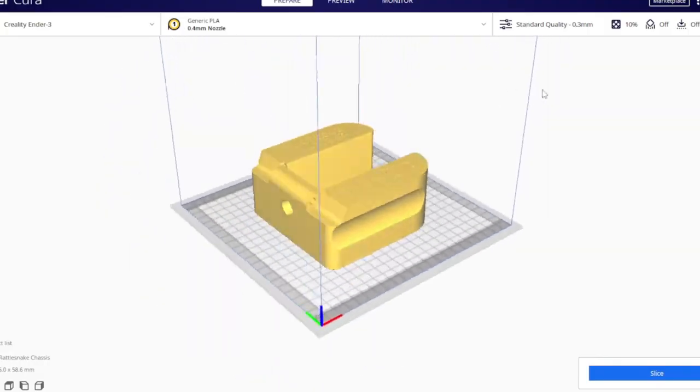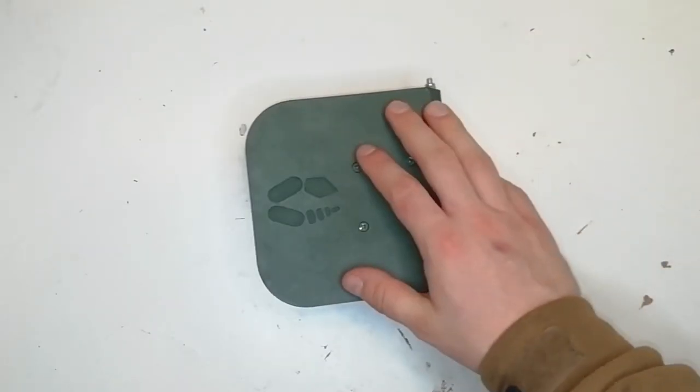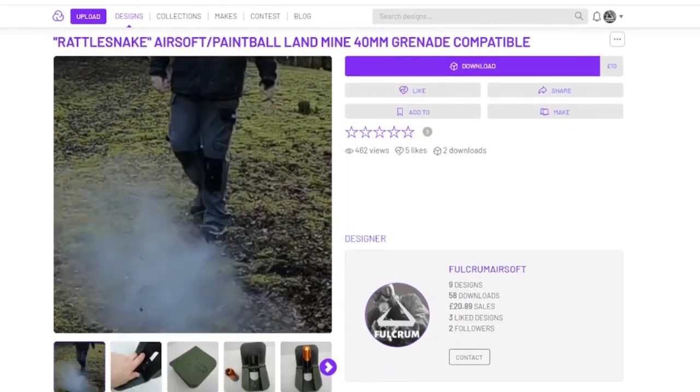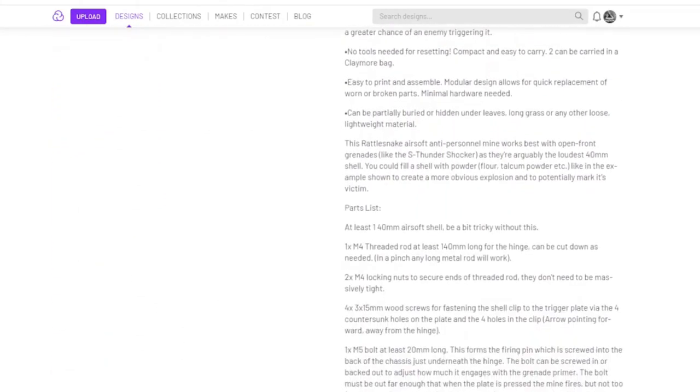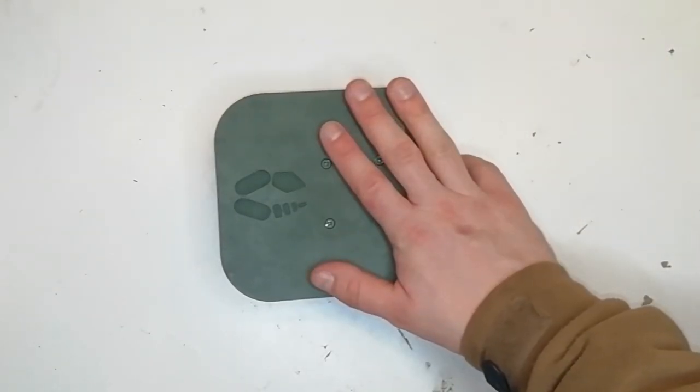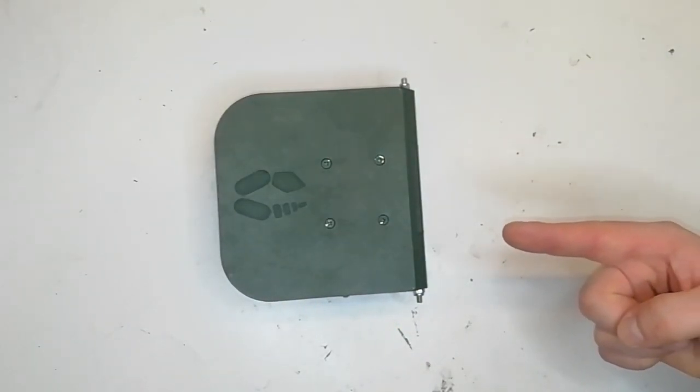If you want to print your own Rattlesnake blast mine, then please make sure you check out the link in the description to my cults page. There's also a lot more written information on the page about it. If you have any further questions, please make sure you leave them in the comments. But if this isn't unconventional enough for you, then make sure you check out this 3D printed airsoft ballistic knife.